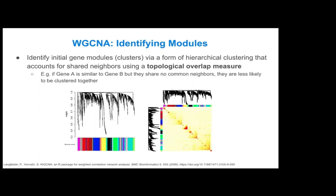WGCNA takes that initial gene-gene co-expression network and identifies gene modules through a form of hierarchical clustering that also accounts for shared neighbors — what the original authors called a topological overlap measure. For instance, if gene A is similar to gene B in expression pattern but they share no common neighbors, they are actually less likely to be clustered together, because the emphasis is on finding highly connected modules, not just expression similarity alone.